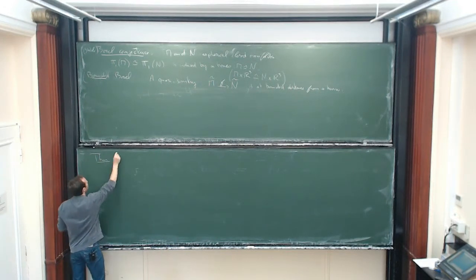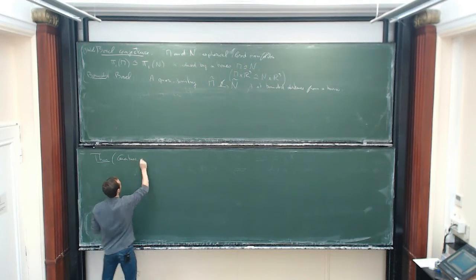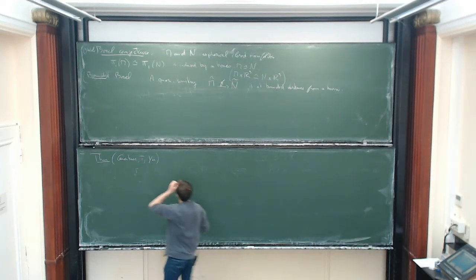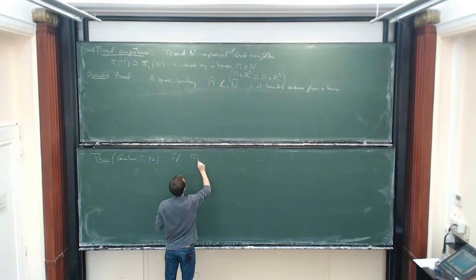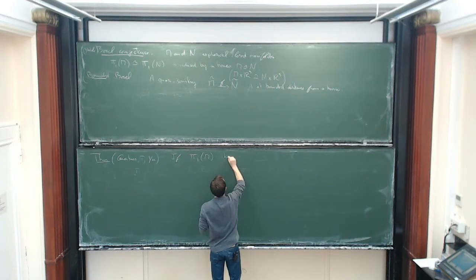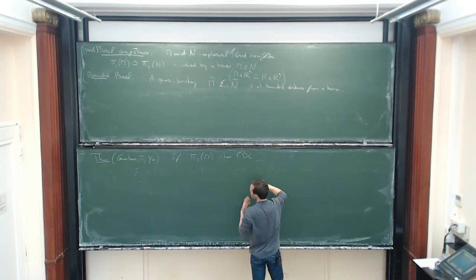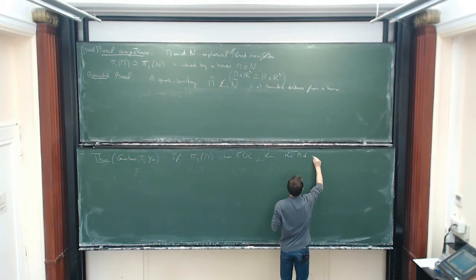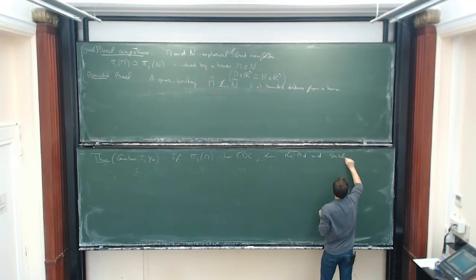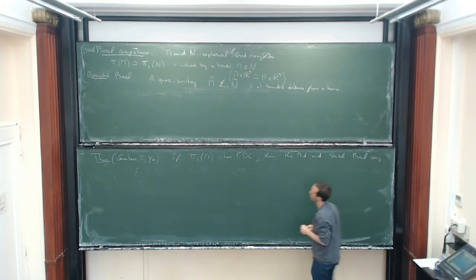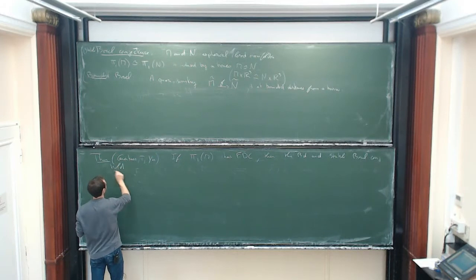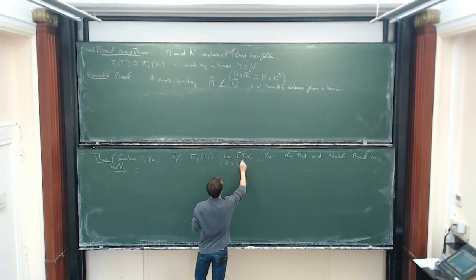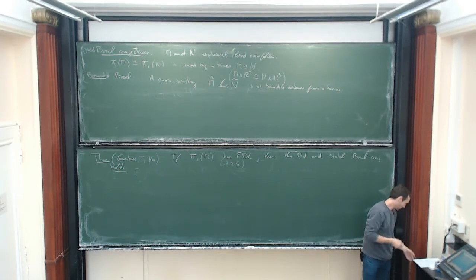Our main results with Gattner — I don't even remember exactly when it was done, some time ago — is that if π₁ of M has FDC, which is a coarse geometric property I'll explain later, then the bounded and the stable Borel conjectures hold. You need the dimension to be large enough because we use surgery theory, which only works in high dimension.